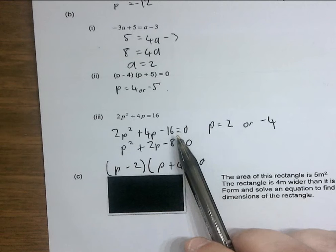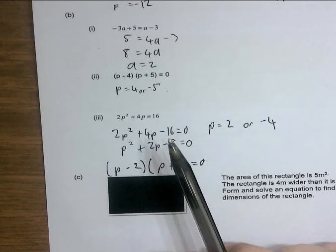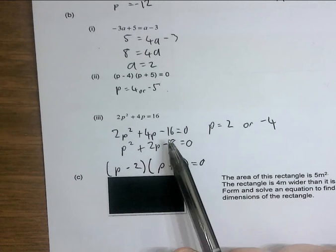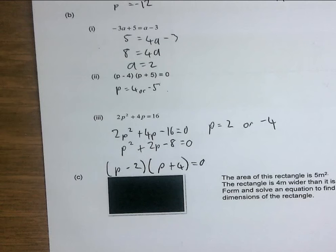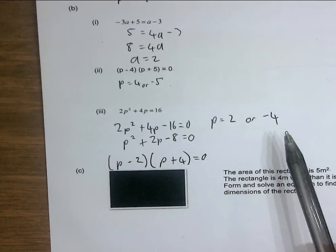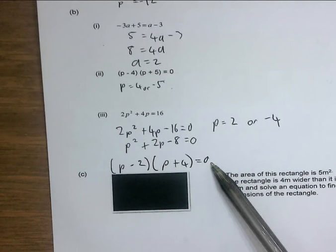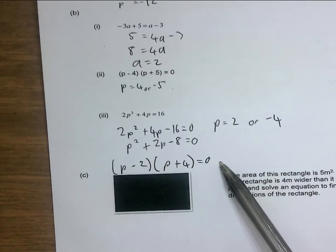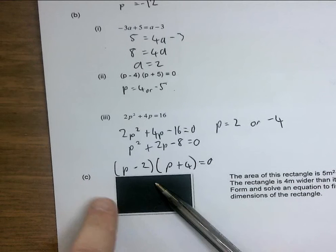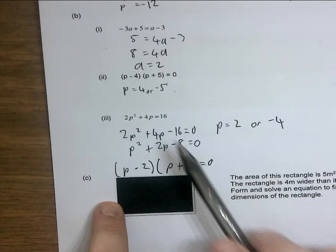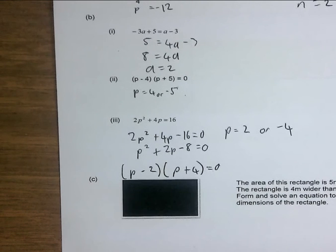Step 1: rearrange to make it equal to zero. Step 2: simplify if possible. Step 3: factorize — then the answers are just the opposites of the numbers in the brackets. It's easy to solve when it's in that form. If it were equal to 8, the best approach would be to expand and solve using the same method.